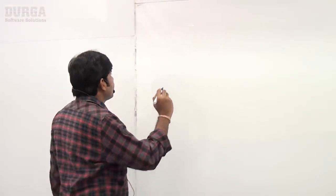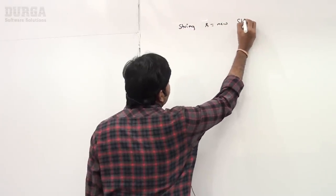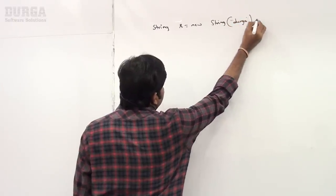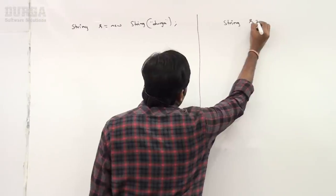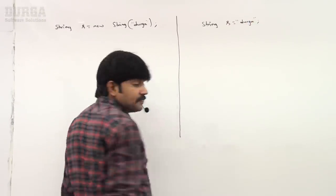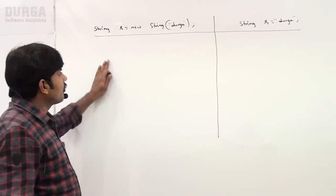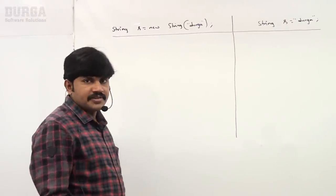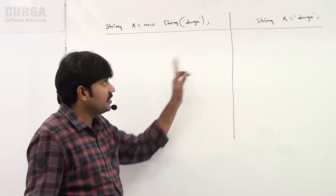In the last two videos we covered immutability, mutability, the equals method, and the difference between String and StringBuffer. Now the next case is a very important concept: what is the difference between `String s = new String("durga")` and `String s = "durga"`? This is the most dangerous point and almost all of our future discussion is based on this example.